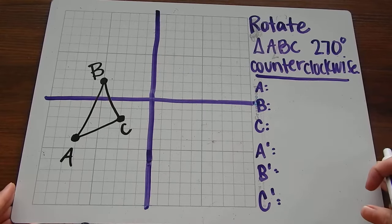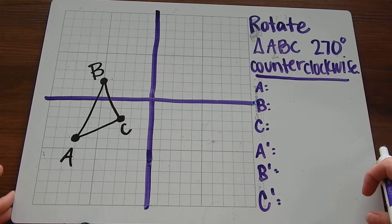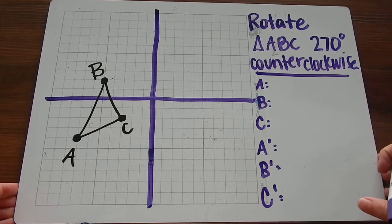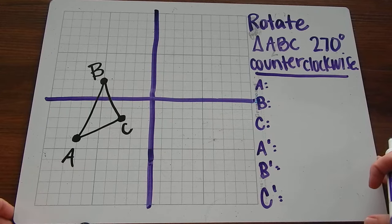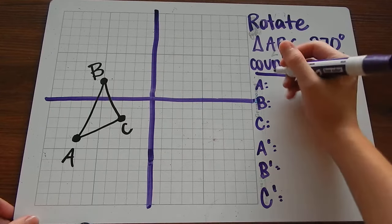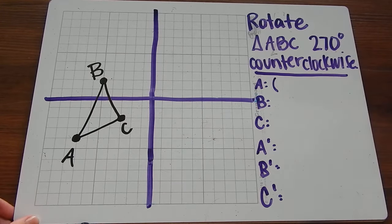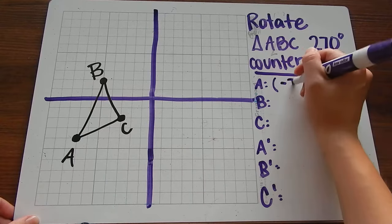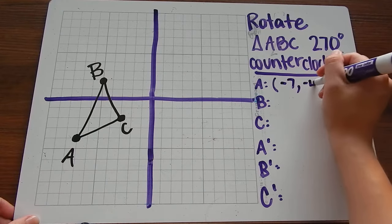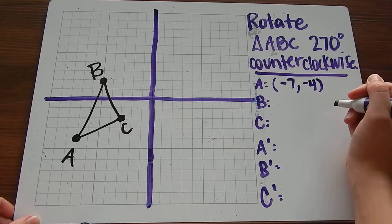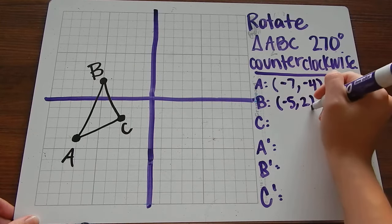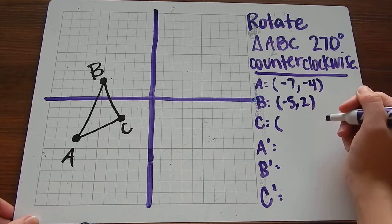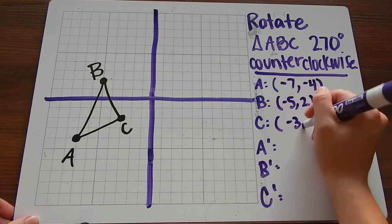Our next example says rotate triangle ABC 270 degrees counterclockwise. Again, we're going to start by listing the coordinates. So coordinate for point A is going to be (-7, -4). Point B is (-5, 2). And point C is (-3, -2).